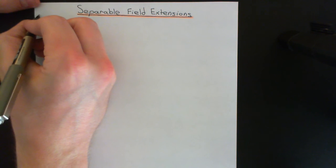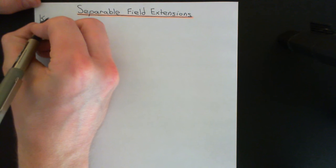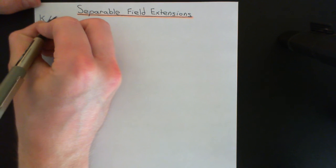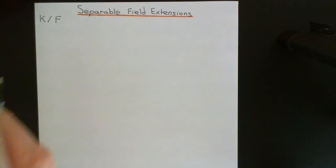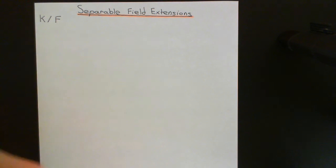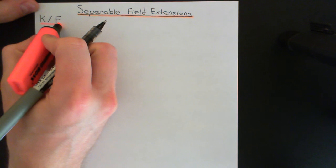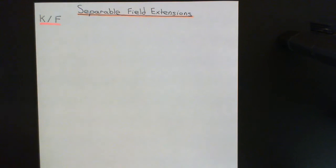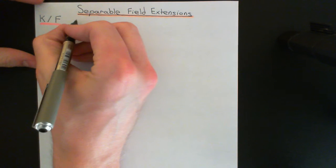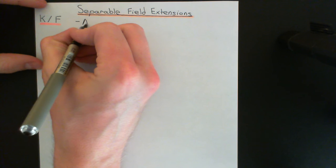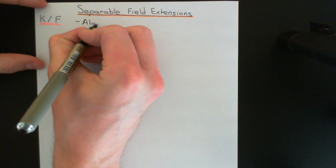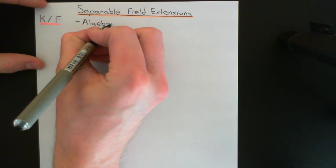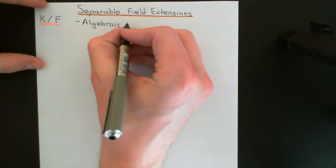We'll have K, which is a field extension of some smaller field, capital F. We're going to call this field extension a separable field extension if it obeys two criteria. The first criterion that it must obey is that it must be an algebraic field extension of F — so the larger field K must be algebraic over F.